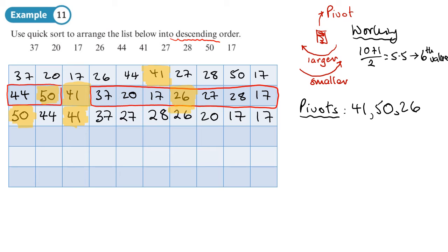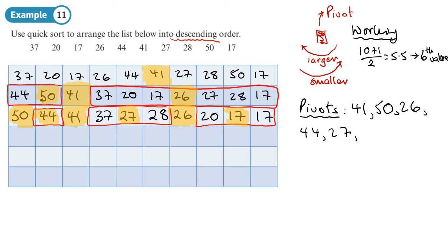Highlighting our sub-lists: 44 on the far left, then 37, then 27, 28, then 20, 17, 17. The next pivots to choose are 44, 27, and 17.